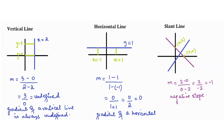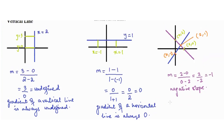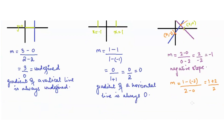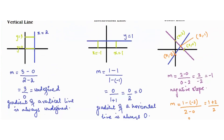Looking at the blue line, taking points (0, -2) and (2, 1), m equals 1 minus negative 2 over 2 minus 0, which is 1 plus 2 over 2, giving 3 over 2. The slope is positive this time because as x increases, y also increases. This is why the blue line has a positive slope and the purple line has a negative slope.